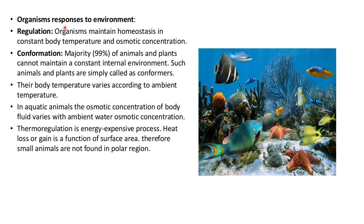Now, how do organisms respond to the environment? One way is regulation: organisms maintain homeostasis — constant body temperature and osmotic pressure. For example, humans maintain constant body temperature whether it is very hot or cold in the environment. Another response is conformism: the majority of animals and plants cannot maintain a constant internal environment. These are called conformers — their body temperature varies according to the ambient temperature, and in aquatic animals the osmotic concentration of body fluid varies with ambient water osmotic concentration.